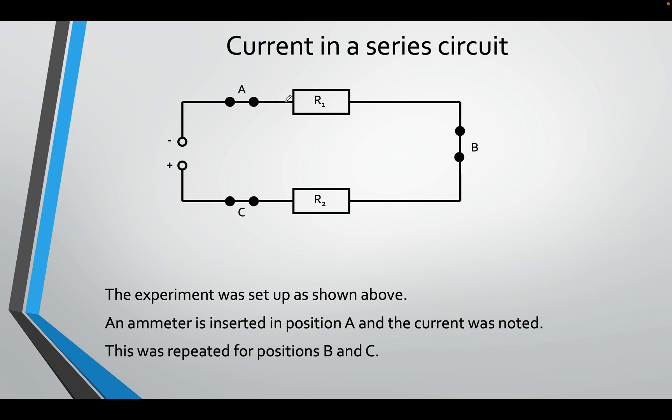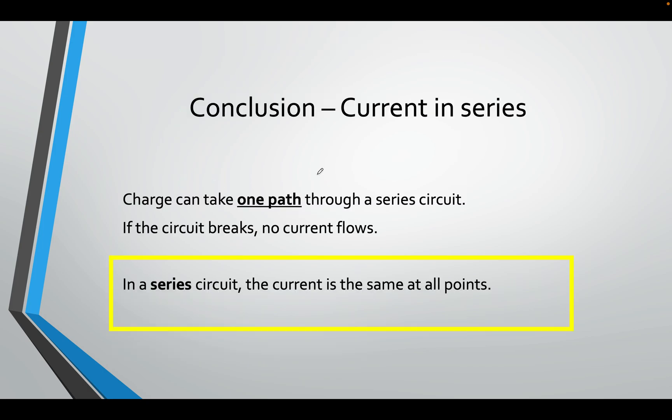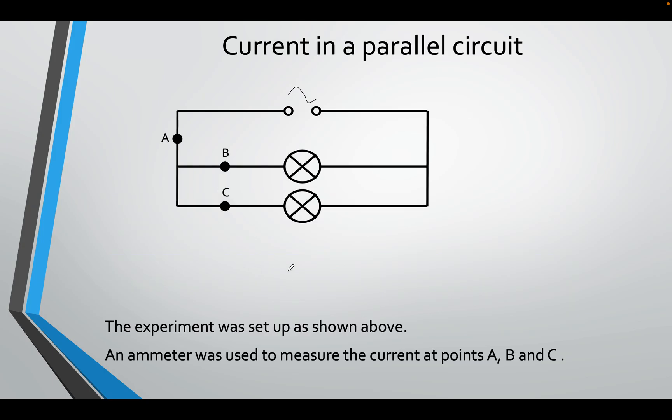So in a series circuit, we did this in the lab. We measured the current here, here, and here, and we found that if we have a current flowing, if it had two amps, it will flow in one path, one straight path. So this will also end up being two amps, and this will be two amps as well. The current is the same at all points. So charge takes one path, and if it's a broken circuit, current will not flow. It will be a broken, open circuit. In series, the current is the same at all points.